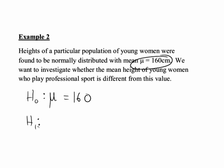For H1 we look at the wording of the question. Here it simply asks whether the mean height of young women who play professional sport is different from 160. So H1 is mu not equal to 160. Notice we are allowing for the possibility in both directions — the true mean height might be greater than 160 or less than 160. When allowing for a difference in either direction, giving mu not equal to some value, that is a non-directional or two-tailed hypothesis test.